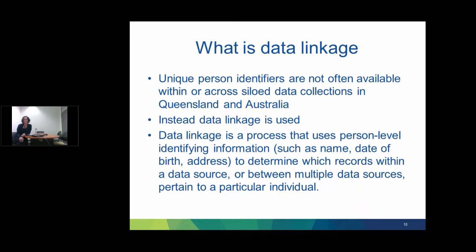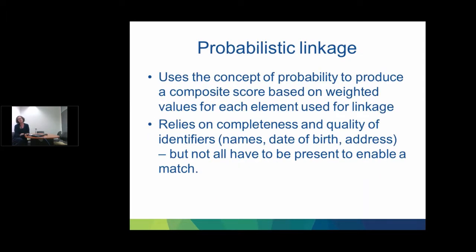The reason we do linkage is that across most of these data collections there is no unique identifier that can say that information relates to a single person across collections. So we use data linkage — a process that uses person-level identifying information, things like name, date of birth and address, to determine which records within or between data sources relate to a particular individual. When we talk about linkage, we're usually referring to probabilistic matching, using probability to work out which records relate to an individual. The strength of this is that not all information needs to be available and the quality of all identifiers doesn't need to be perfect to allow us to make a match.